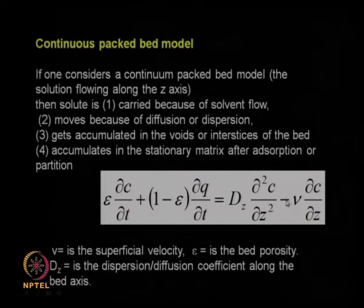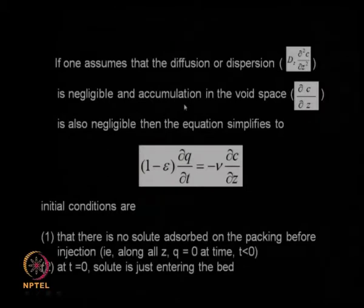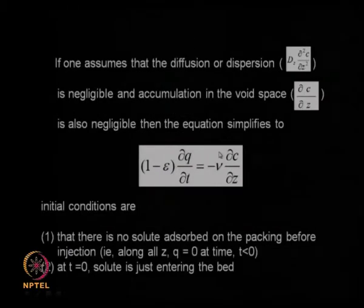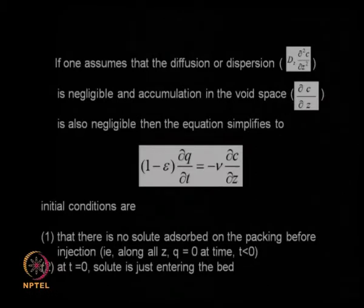To solve analytically, we can consider approximations: assume that diffusion or dispersion is negligible, meaning d²c/dz² can be omitted, and also assume that accumulation in the void space is negligible. Then what remains is accumulation on the stationary phase (solid phase) arising from the flow of the bulk solvent. This gives a simpler-looking equation: (1 − ε)(dq/dt) = −v(dc/dz).